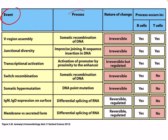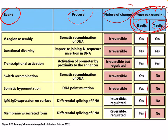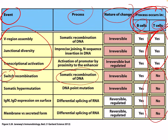Comparing B and T cells in terms of diversity: T cells have similar VDJ rearrangements, transcriptional activation, and diversity mechanisms. However, T cells do not undergo switch recombination, somatic hypermutation, or surface immunoglobulin expression. Once T cells develop their unique antigen receptor features, they are essentially fixed and do not change again, which is quite different from B cells.